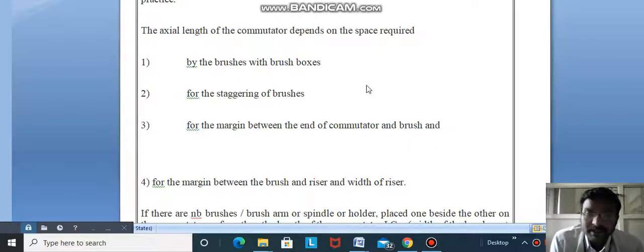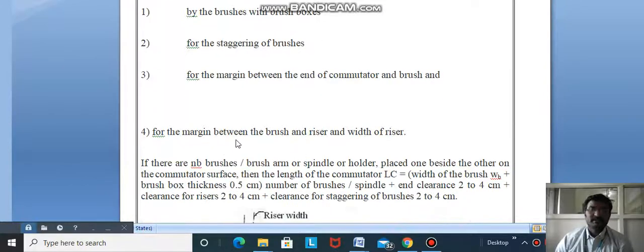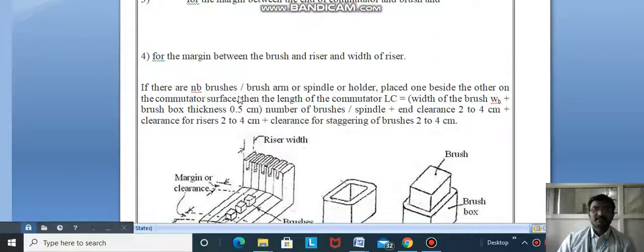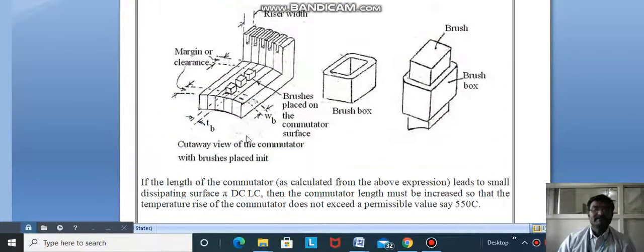The axial length of commutator depends on the space required by the brushes with brush boxes, for staggering of brushes, for margin between the end of commutator and brush, and for the risers. The length of commutator Lc equals width of brush Wb plus brush box thickness 0.5 cm times number of brushes per spindle, plus end clearance 2-4 cm, plus clearance for risers 2-4 cm, plus clearance for staggering brushes 2-4 cm.